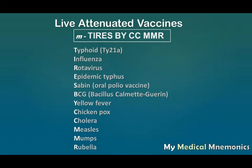T for typhoid, I for influenza, R for rotavirus, E for epidemic typhus, S for Sabin — that is oral polio vaccine, B for BCG (Bacillus Calmette-Guérin), and Y for yellow fever vaccine.